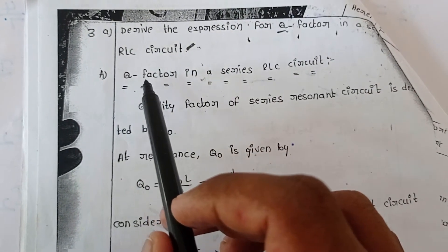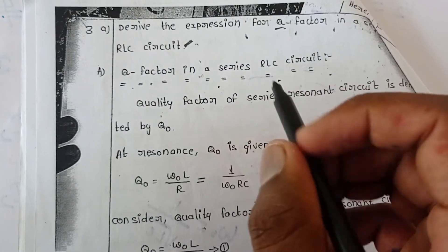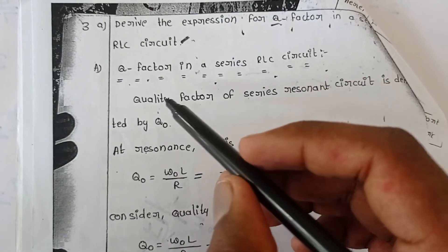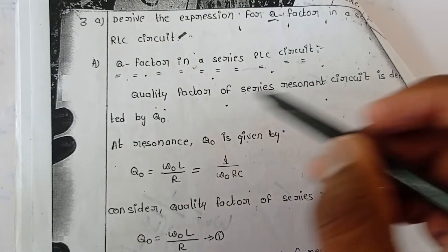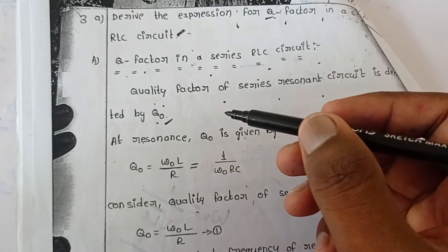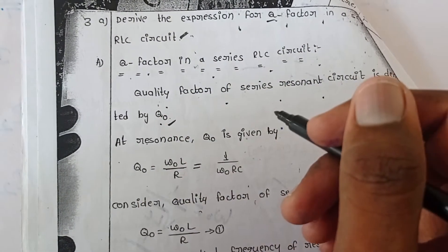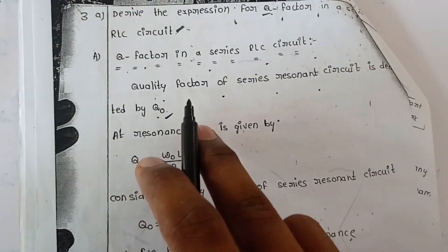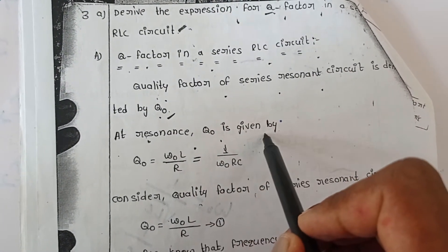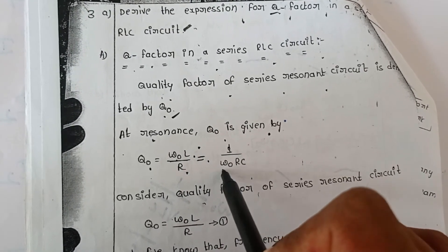First let's see the answer. Q factor in series RLC circuit — before finding the Q factor, we have to know about Q factor. Quality factor of series resonant circuit is defined by Q0. Quality factor is indicated by Q0 or simply Q, where 0 indicates that it is at resonance. At resonance, Q0 is given by: Q0 = omega_0 * L / R = 1 / (omega_0 * R * C).